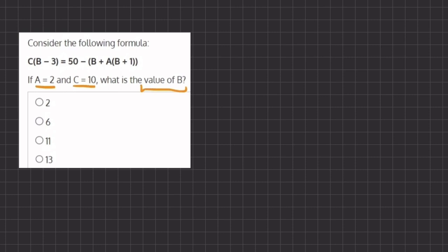So our first step is to plug in our values for a and c. Let's do so. We have, instead of c, I'm going to be writing 10, and I'll open our parentheses, and b stays our unknown variable, so we will write b.